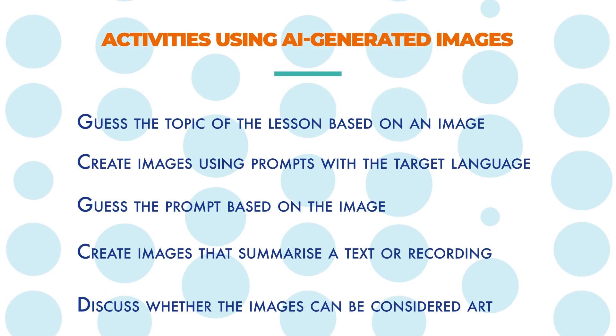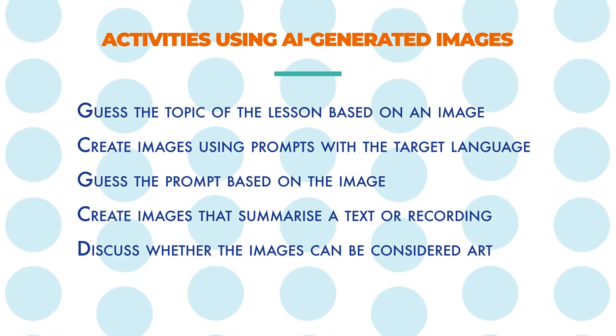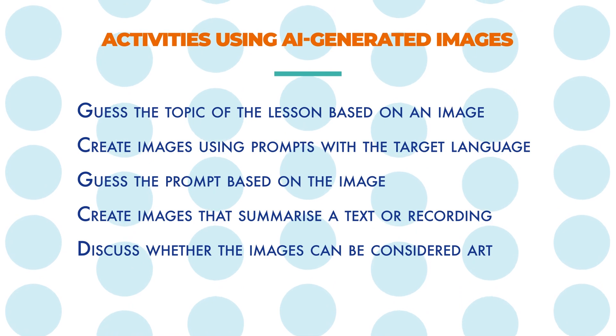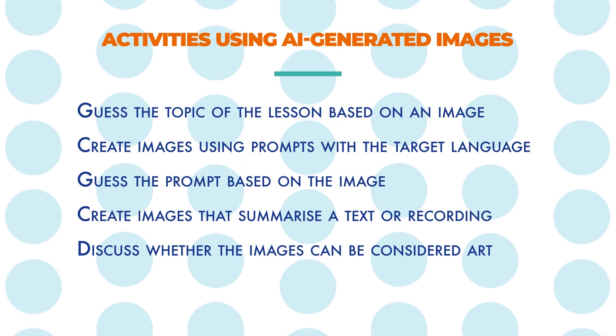Here are some suggestions on things students can do involving AI-generated images: guess the topic of the lesson based on an image; create images using prompts with the target language; guess the prompt based on the image; create images that summarize the text, a recording, or even the entire lesson; and discuss whether the images can be considered art. Also, if you're like me and usually spend a lot of time trying to find images on Google that fit a leading activity you designed — let's say, an image of a horse trying to get into a tiny house — tools like DALL-E can help you save a lot of time and create exactly what you want.